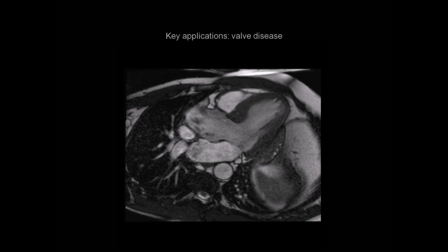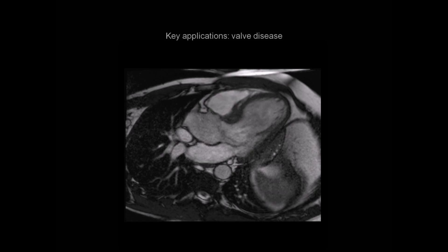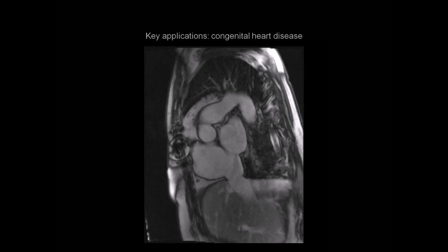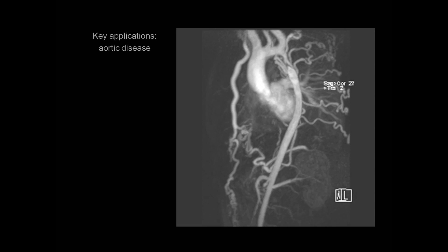CMR is also commonly used in the assessment of valve disease, where it can assess the etiology of a valve problem, quantify the severity, and also look for any consequences such as aortic or left ventricular dilatation. CMR also plays a valuable role in the assessment of congenital heart disease, as in this example here that shows an atrial septal defect. And CMR can also be used to assess the structure and dimensions of the aorta, as in this case of an aortic coarctation.